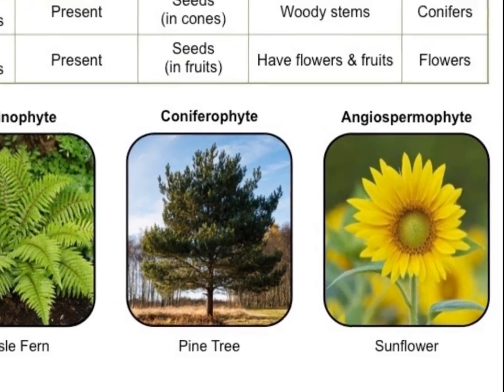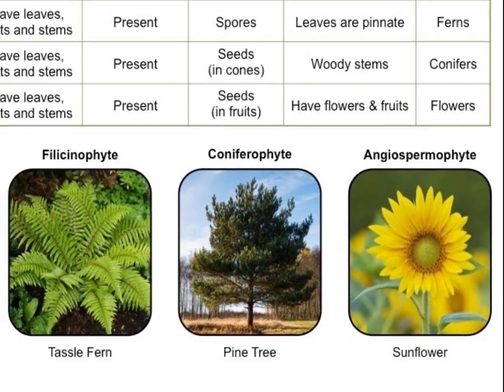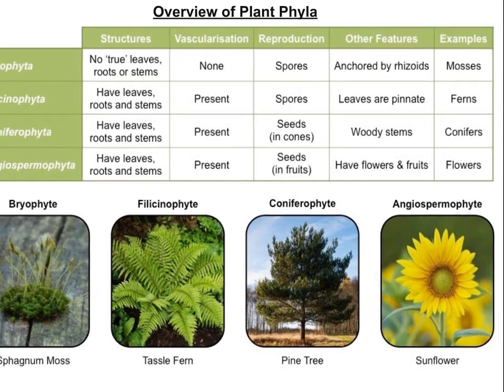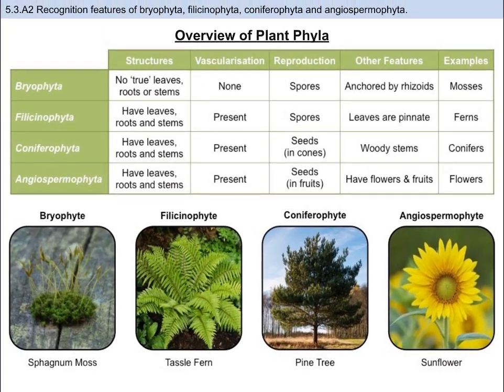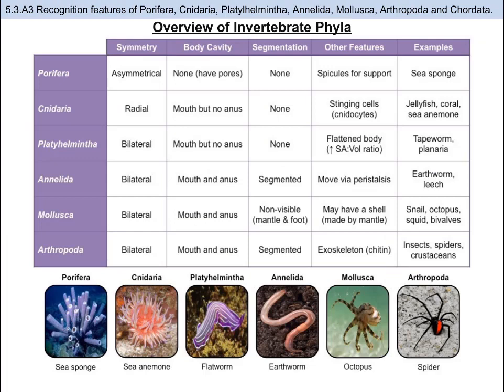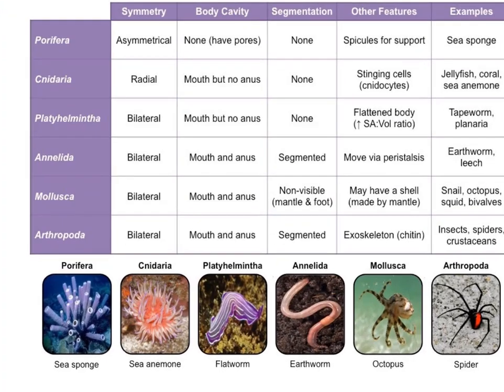We know this because features such as woody stems, seeds, and vascularization were all distinguishing characteristics of more complex plants. Just like plant phyla, you need to know phyla of the animal kingdom. There are seven animal phyla you must know. Six of these are invertebrates, meaning they do not have a vertebral column. The last one is a class within the phylum Chordata — the vertebrates — and they are distinguished by having a vertebral column.